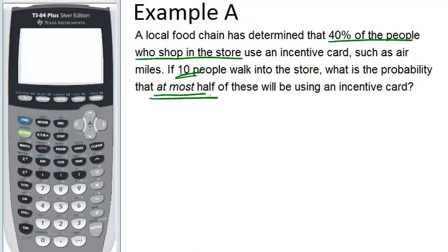This is a binomial situation because for every person that comes in they will either use the incentive card or they won't. So there's only two possible outcomes for each trial. Now this is a cumulative density function problem because we want to know the probability of at most half. So we want to know the probability that X, the number of successes, is less than or equal to 5 because 5 is half of 10.